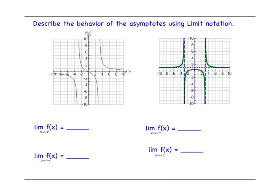Instead of writing the words, we're going to use limit notation. The limit as x approaches 3 from the right: I look on the graph, here's 3, and as x is approaching from the right, the graph is increasing without bound, so it's positive infinity. Now on this same graph, I want to know what's happening as x approaches infinity. When approaching 3-plus I was approaching a vertical asymptote, but approaching x to infinity means I'm looking at a horizontal asymptote — and the graph is getting really close to 0.